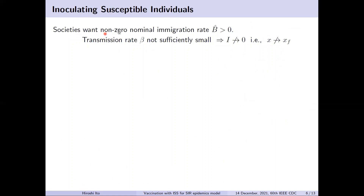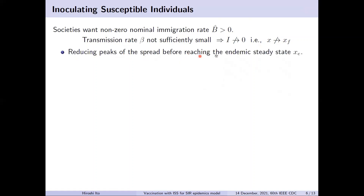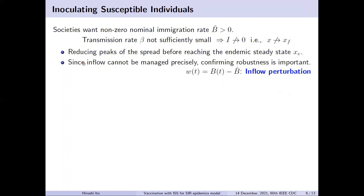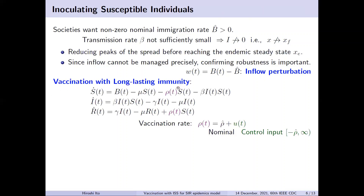Since a society usually wants a non-zero immigration rate, the population of infected individuals cannot reach zero for a disease of large transmission rate. In other words, the disease-free equilibrium cannot be the target. The society wants to reduce peaks of the spread before reaching the endemic steady state. In realizing peak reduction, the society cannot regulate inflow precisely; therefore, confirming robustness with respect to inflow perturbation is important. Assuming immunity is long-lasting, vaccination of susceptible individuals can be incorporated into the SIR model. Here, rho is the vaccination rate, rho-hat is the base point, and U is the control input defined on a domain where vaccination cannot be negative.